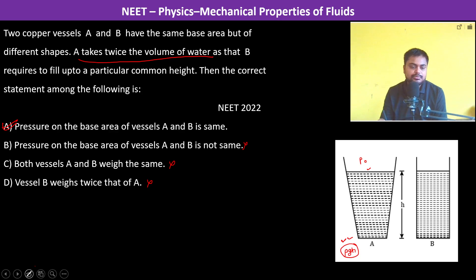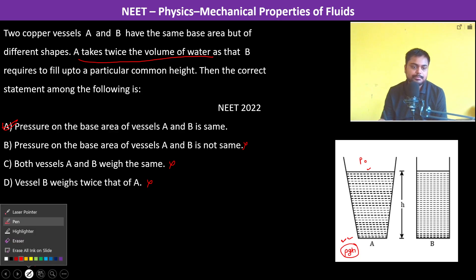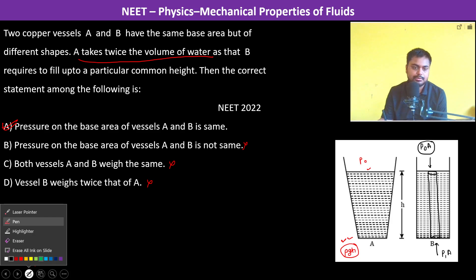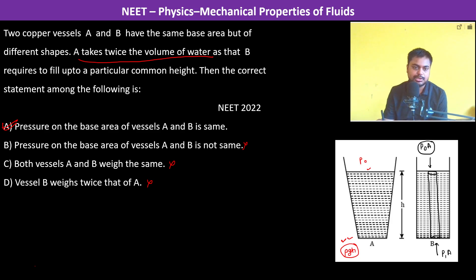And we can even prove also. Let us take a column of water. We take a column of water like this. Here the pressure is P₀. Therefore, the force is P₀ into A. Here the force, let us say, it is P₁ into A. If we draw the free body diagram of the column of water, it is going to be something like this.